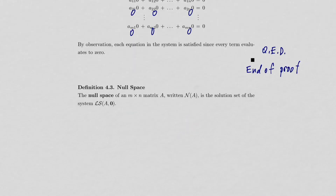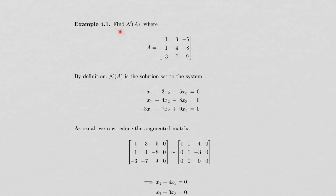Now we get to the null space of a matrix. The null space of an m by n matrix A, written N(A), is the solution set of the homogeneous system LS(A, 0). This definition will make more sense later when we define vector spaces and subspaces, but for now it's just a name. To find the null space, you solve the system that has that matrix as its coefficient matrix, and that solution set is the null space.